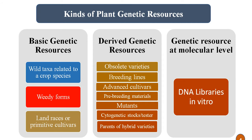There are different kinds or types of plant genetic resources. For simplicity, these are classified into three types: basic genetic resources, derived genetic resources, and genetic resources at the molecular level. The basic genetic resources are present as such in nature — for example, wild taxa related to the crop species, weedy forms of crop plants, and the landraces or primitive cultivars.